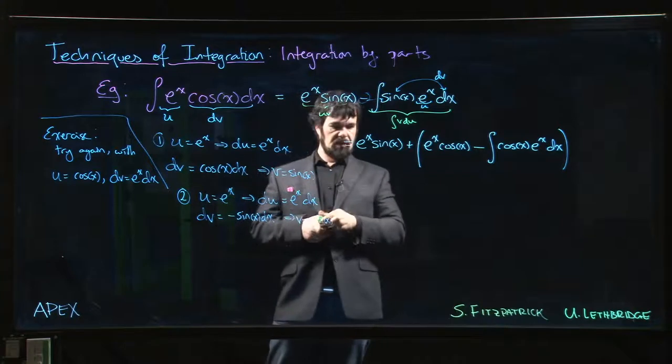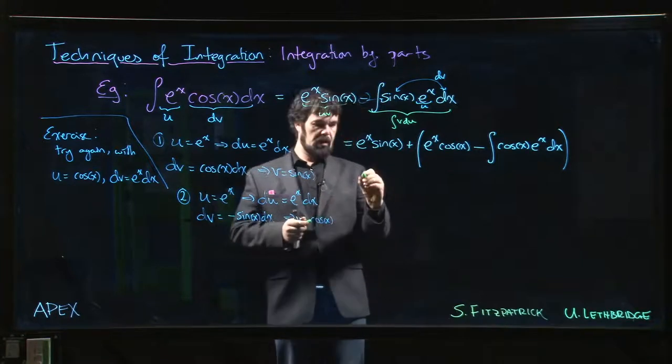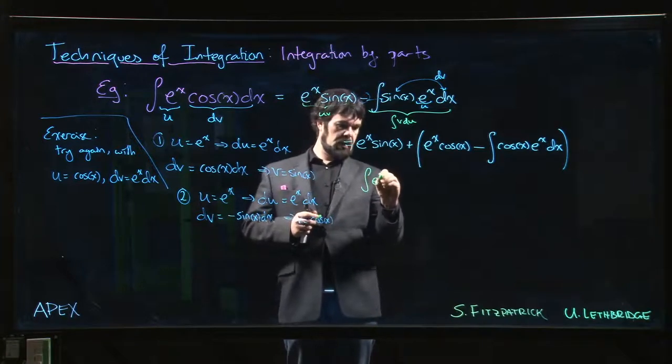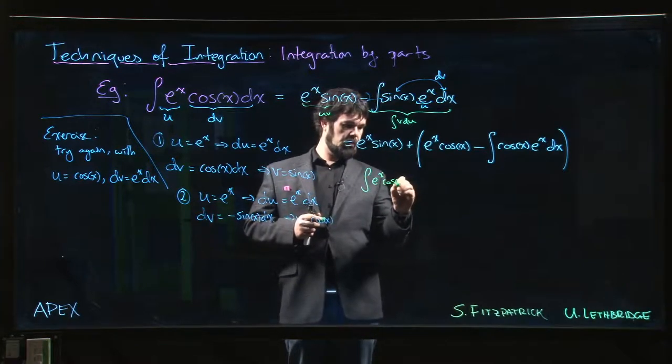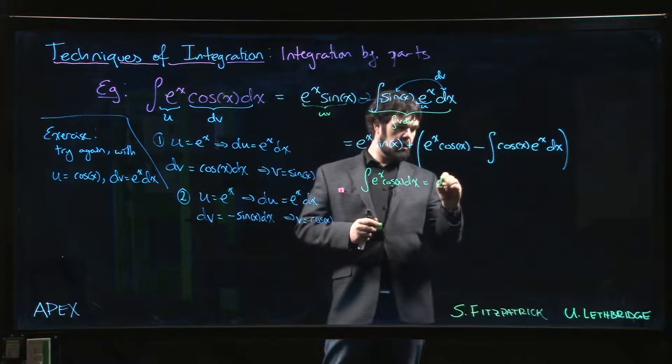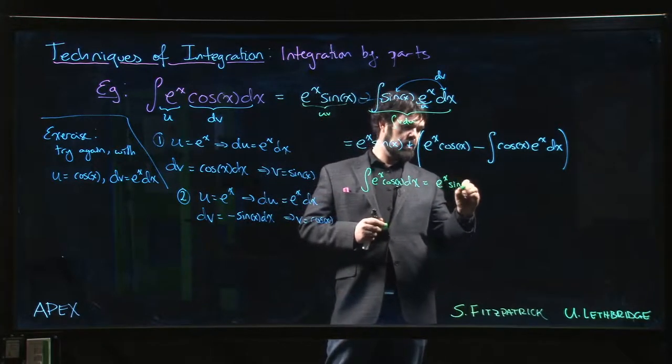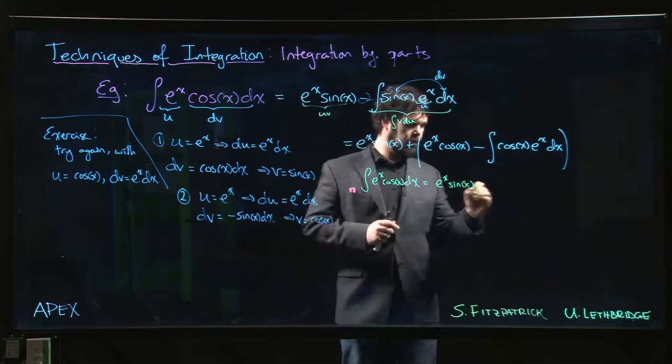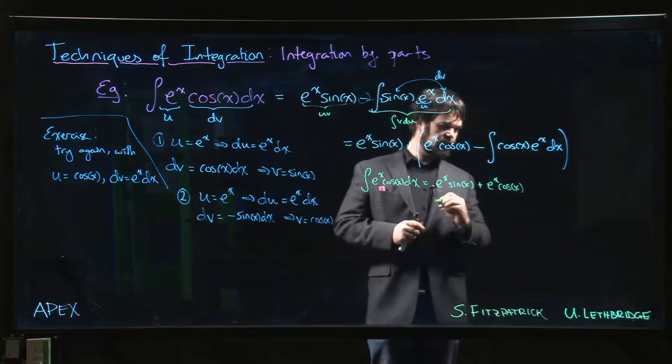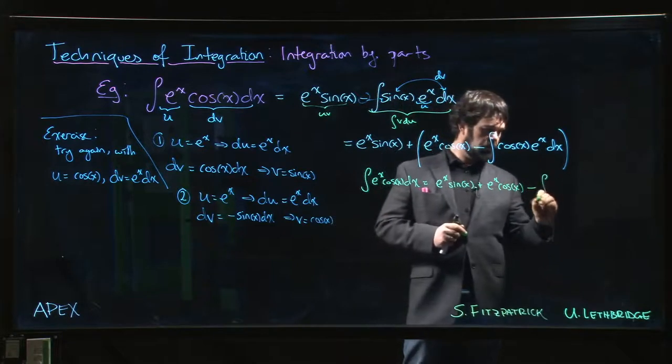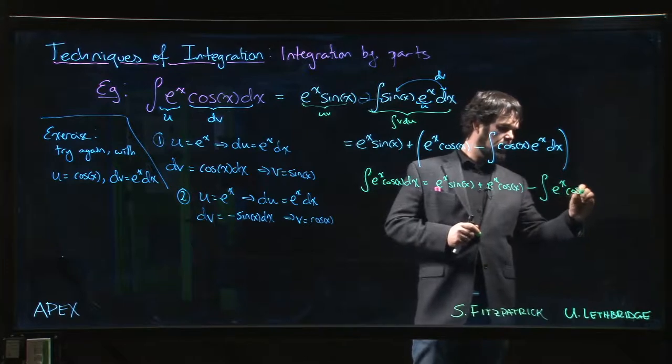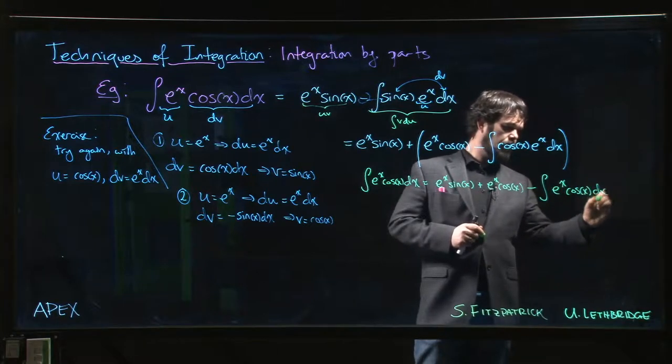So what we have, let me write the whole thing out so you can see exactly what's going on. So you have the integral of e to the x cos x dx is equal to e to the x sin x plus e to the x cos x minus the integral of e to the x cos x dx.